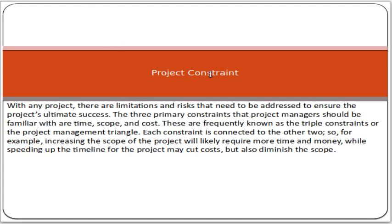Whenever we talk about any project, there are limitations and risks that need to be addressed to ensure the project's ultimate success. The three primary constraints that a project manager should be familiar with are time, scope, and cost. These are frequently known as the triple constraint or the project management triangle. Each constraint is connected to the other two – for example, increasing the scope will likely require more time and money, while speeding up the timeline may cut costs.